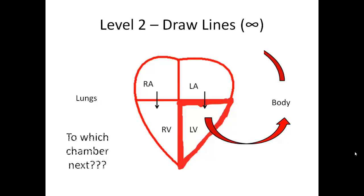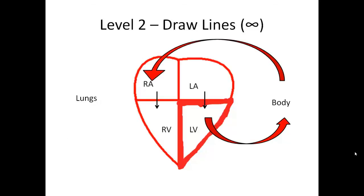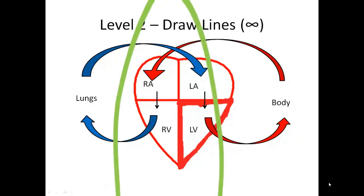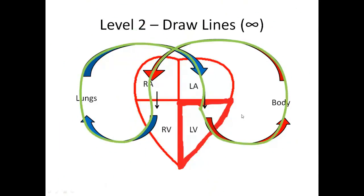Following the arrows from the right atrium, you go down to the right ventricle, then flow around to the lungs, and then there's only one chamber left to return to — the left atrium. If you look at that design with the arrows, you'll see that infinity sign that you can place over it, which makes it nice and easy to draw. Infinity has no beginning and no end.